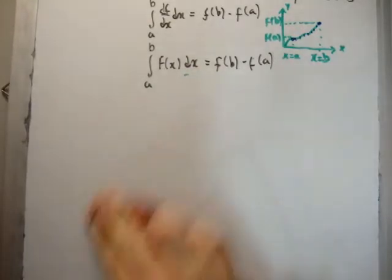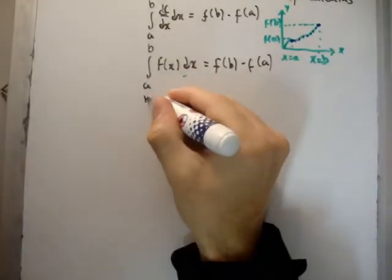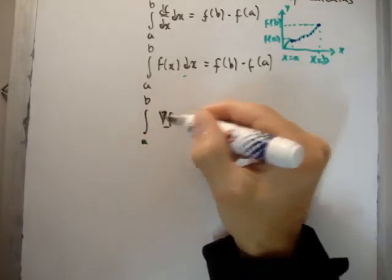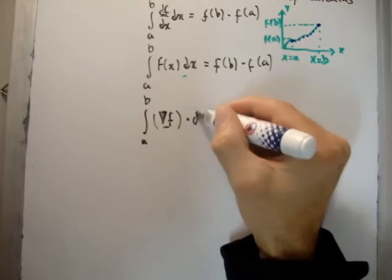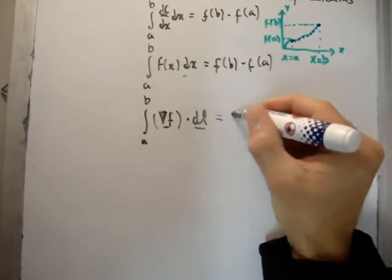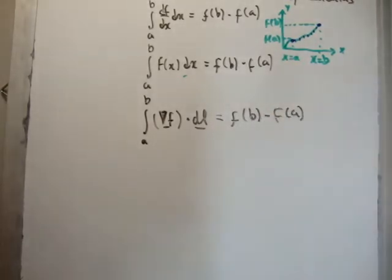However, the important thing here is that, I'm just going to write the fundamental theorem for gradients here as follows. So it's going to be the gradient of f, which of course is a vector field dotted with our displacement vector dl, and that's going to be f at b minus f at a.